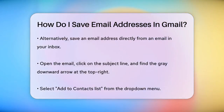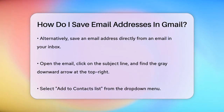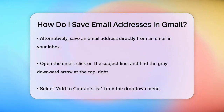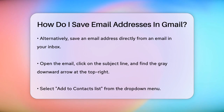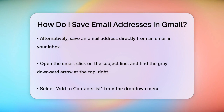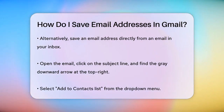Another quick way to do this is directly from an email in your inbox. Find the message from the person you want to save, click on the subject line to view the message, and then click the gray downward-pointing arrow at the top right of the message. Select 'Add to Contacts list' from the drop-down menu, and the sender's email address will be added to your contacts.